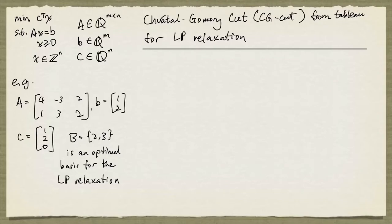We're going to look at how to obtain a CG cut from the tableau for LP relaxation of an integer programming problem in the following form: minimize C transpose x subject to Ax equal to b, x greater than or equal to 0, and all the variables are required to be integers. We assume the problem data are rational.